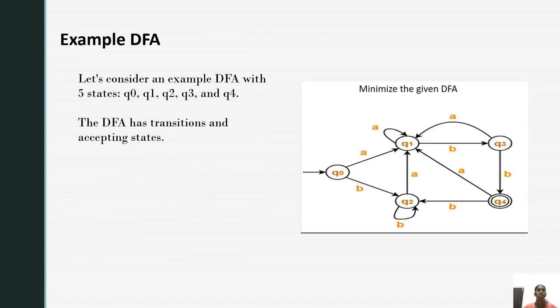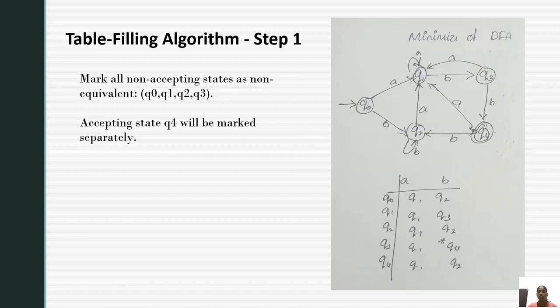Next is the example of DFA. Let us consider a DFA with 5 states that is Q0, Q1, Q2, Q3, Q4, with Q4 being the final state. The DFA has transitions and accepting states. For very first, let us write the table filling algorithm. Step 1 is mark all non-accepting states. Mark the transitions of A and B which move from one state to another state.